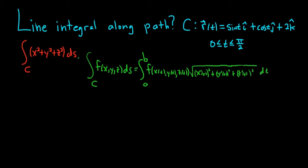And so what is this x, y, and z? Well, C is the path, and it's given by r of t equals x of t i hat plus y of t j hat plus z of t k hat.